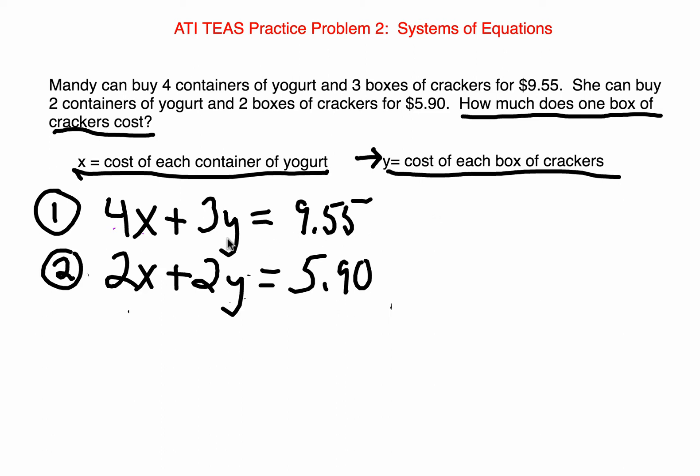Therefore, we are going to eliminate the X variables and solve for the Y variables. How are we going to do that? Well, we are going to have to eliminate this 2X and this 4X. The only way we can do that is to make this 4X and this 2X turn into a 4X so that they can be eliminated.